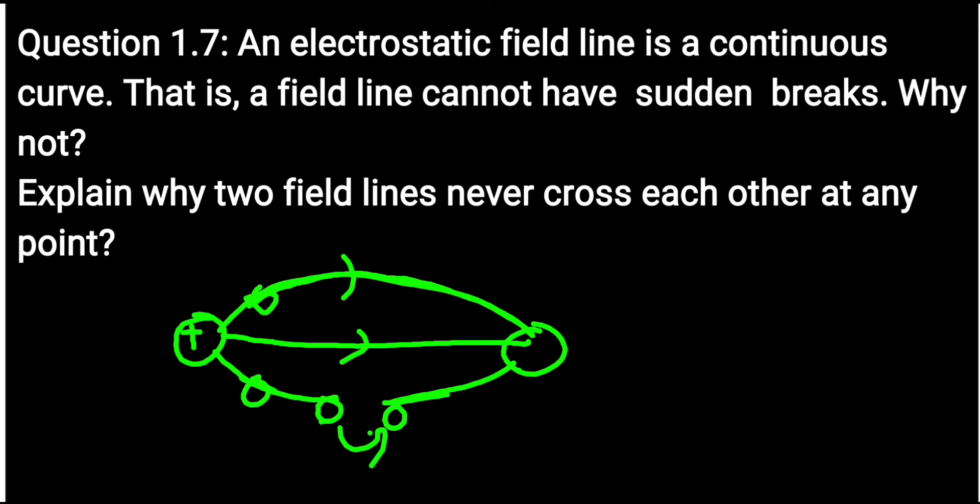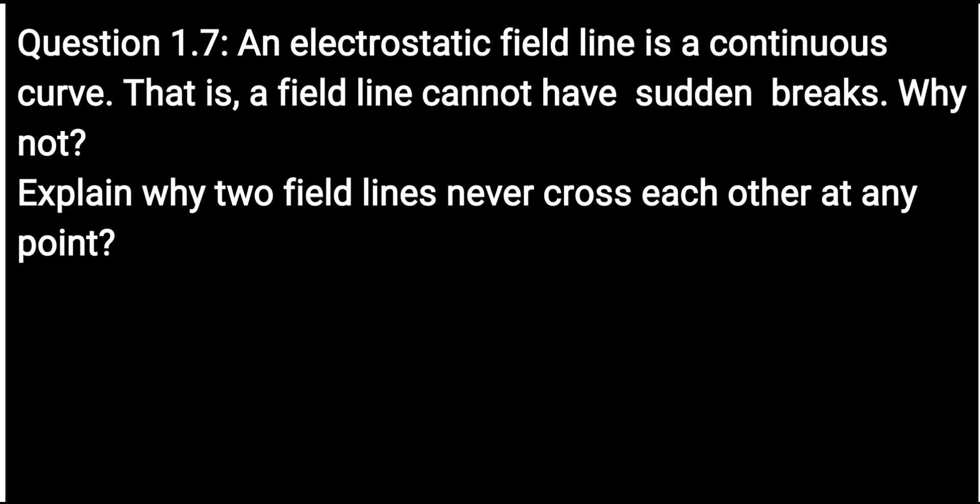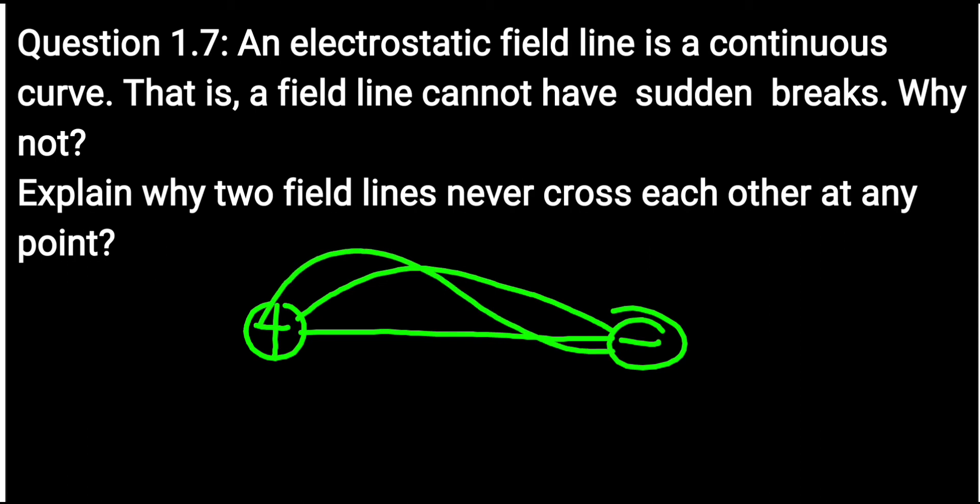Secondly, lines cannot intersect. Now why? Suppose this is positive, this is negative. We cannot have intersecting lines. Suppose that these are two different lines. Just imagine that at this point these are intersecting.